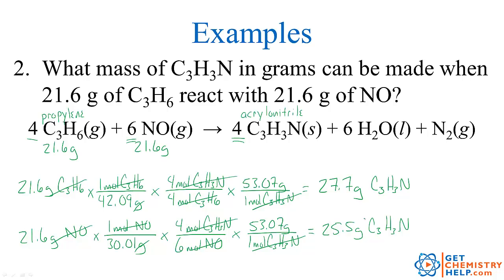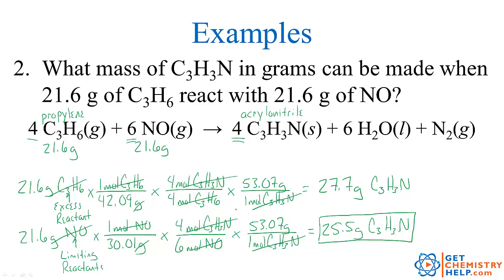So what mass of acrylonitrile do we actually make? We always pick the smallest one, so we would only make 25.5 grams of acrylonitrile. The reactant that gave me this mass was NO, so nitrogen monoxide is the limiting reactant — it runs out first and limits us to a maximum of 25.5 grams. We had enough propylene to keep going and make another 2.2 grams up to 27.7, so propylene was the excess reactant. Hope you enjoyed this lesson on limiting reactant problems. Leave a comment below and click subscribe to be notified when new videos are posted. We'll see you back at getchemistryhelp.com.